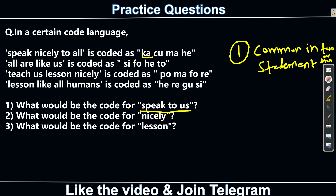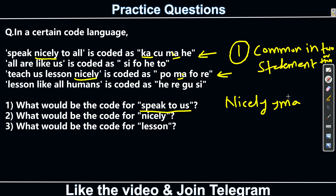Then look at cu — cu is also only in the first statement, so skip it. Then come to ma — ma is here in the first statement and also here in another statement. So there must be one word common between those two statements because of ma. Comparing 'speak nicely to all' and 'teach us lesson nicely', the common word is 'nicely'. So the code word for nicely is ma — this is confirmed.